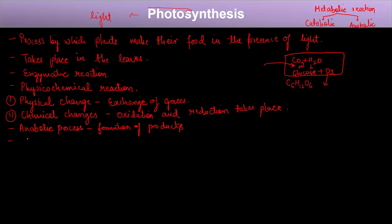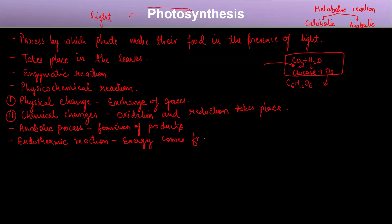The type of reaction that takes place during glucose formation is an endothermic reaction. Endothermic means energy gets consumed, while exothermic means energy is released. The energy for this endothermic reaction comes from light, and hence it is known as photosynthesis because light is essential for this reaction to take place.